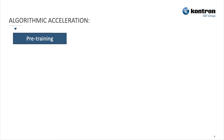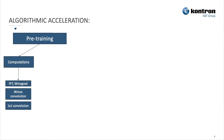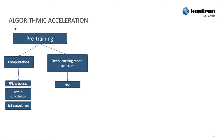Algorithmic accelerations can be categorized into two parts. First is pre-training, meaning you optimize your model before training while you are designing it. You can optimize it for computations — deep learning models have a lot of convolutions — and there are many techniques: FFT, Winograd, atrous convolutions, one-by-one convolutions. The second category is deep learning model structure: you can change the structure of your model to run better. The state-of-the-art technique right now is called AutoML or NAS (network architecture search), which trains a meta-model to find the best architecture.